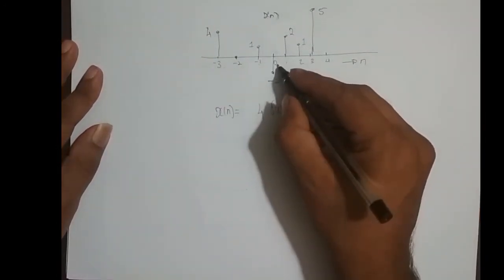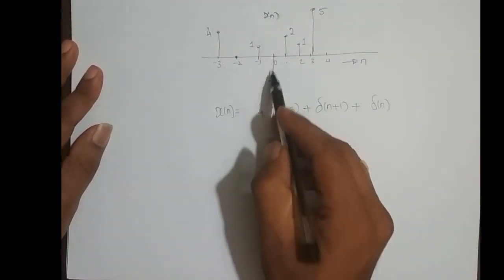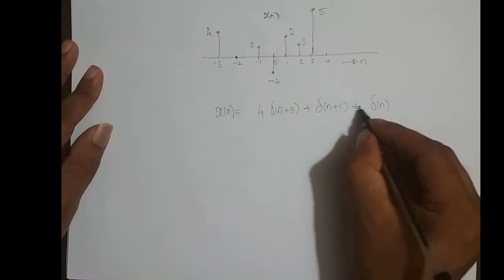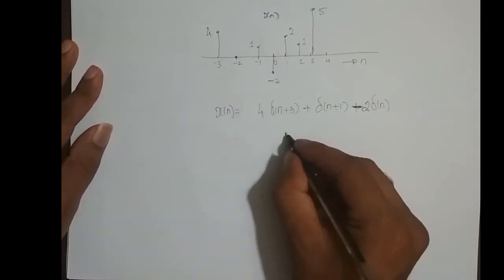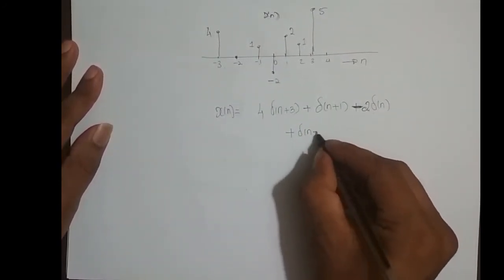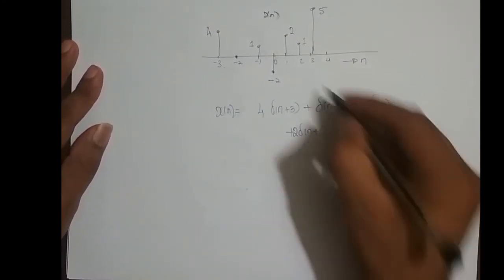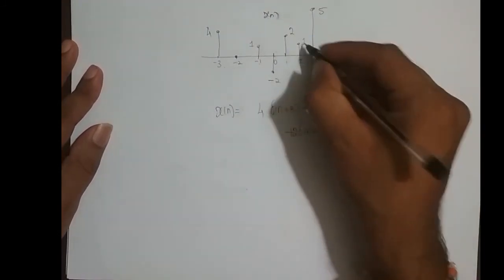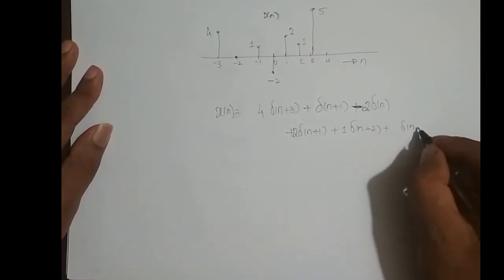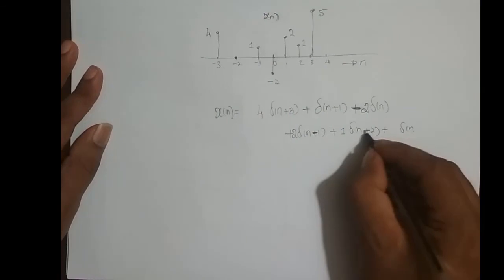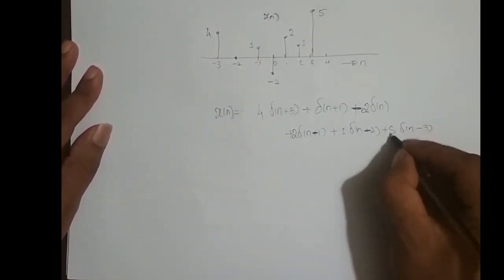At n equal to minus 1, it is delta of n shifted left 1 time — delta of n plus 1 — and the amplitude remains 1. At n equal to 0, delta of n is scaled by a factor of minus 2, so it is minus 2 times delta of n. At n equal to 1, it is delta of n shifted right 1 time and its amplitude is scaled by 2 — giving 2 times delta of n minus 1. At n equal to 2, it is delta of n shifted right 2 times with amplitude 1. And at n equal to 3, the amplitude is scaled by a factor of 5 — so this is 5 times delta of n minus 3.